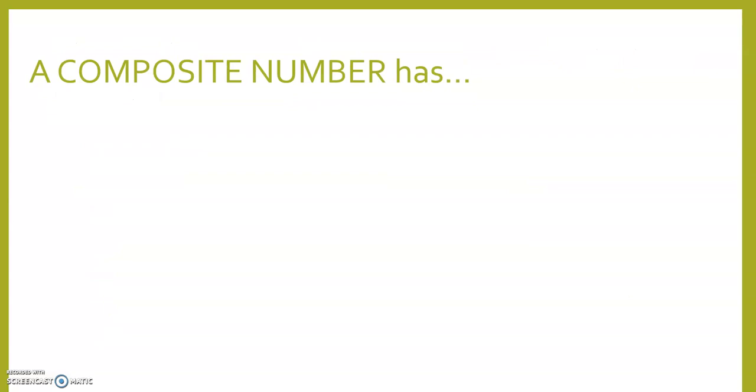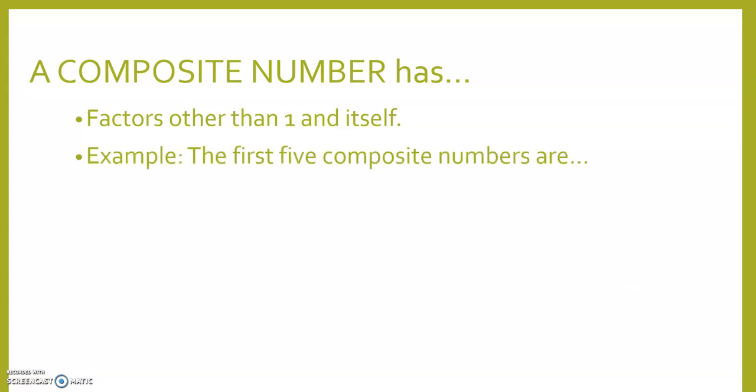A composite number has factors other than 1 and itself. The first 5 composite numbers are 4, 6, 8, 9, 10.